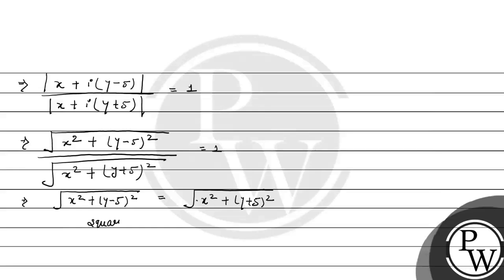Now we square both sides. We get x squared plus y minus 5 whole squared equals x squared plus y plus 5 whole squared.